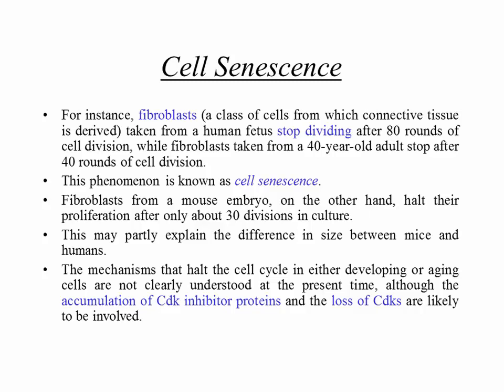The mechanisms that halt the cell cycle in developing or aging cells are not clearly understood at present, although the accumulation of cyclin-dependent kinase inhibitor proteins and the loss of cyclin-dependent kinases are likely involved, since we know these control the cell cycle.